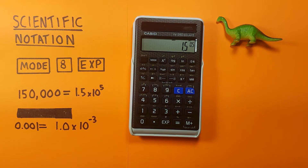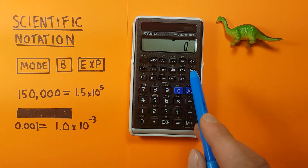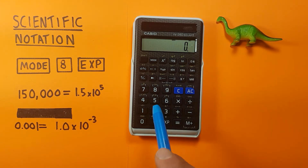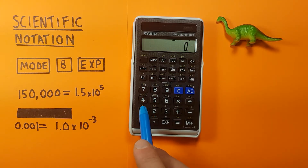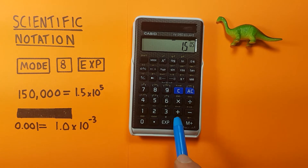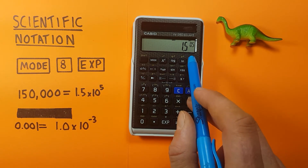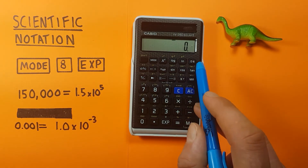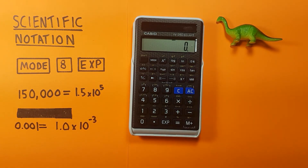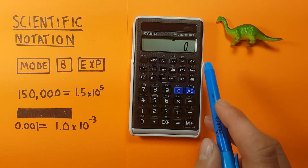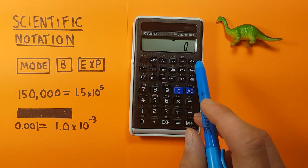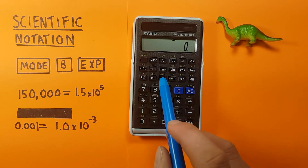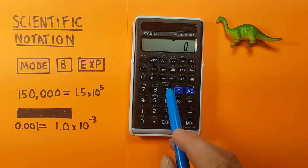While we're in scientific notation mode, if we clear that, keep the SCI, and just enter 150,000 and press equals, it'll convert. To get out of scientific notation mode you can press the ON button or press mode 9.